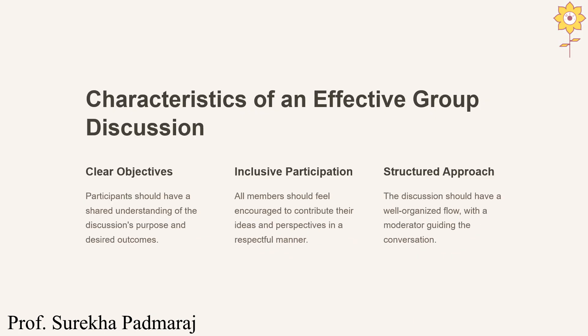What are the characteristics of an effective group discussion? The first one is clear objectives — participants should have a clear understanding of the purpose of the discussion and the desired outcome. Inclusive participation means every member should feel they have contributed their ideas on the topic, which requires a thorough understanding of it. There should also always be a structured approach, with a well-organized flow so it feels like a conversation that is simple and easy to understand.